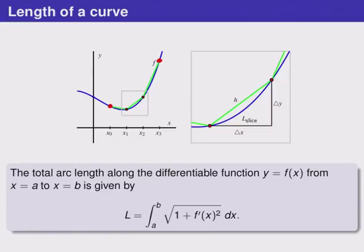We can approximate this using straight line segments like shown in green here and as you can read in the book each of these straight line segments is the hypotenuse of a right triangle and it has a width delta x and a height delta y in this case.